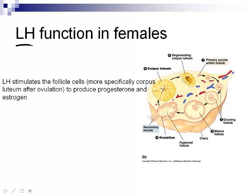LH, luteinizing hormone, is the other hormone released by the anterior pituitary. In males it stimulates testosterone production; in females it stimulates the production of progesterone and estrogen by the follicle cells. After day 14, when ovulation occurs, the corpus luteum is left behind and continues producing these hormones — but very heavily weighted toward progesterone.